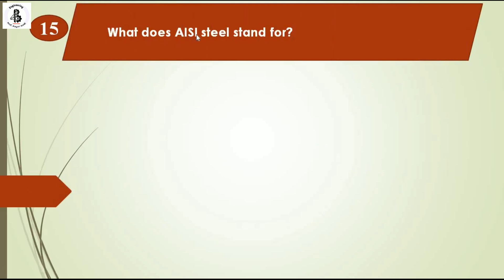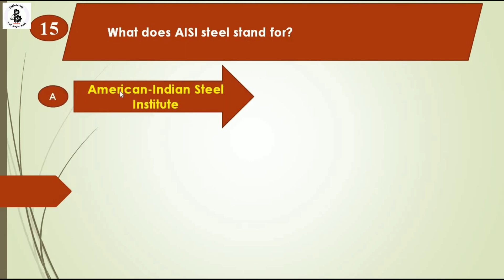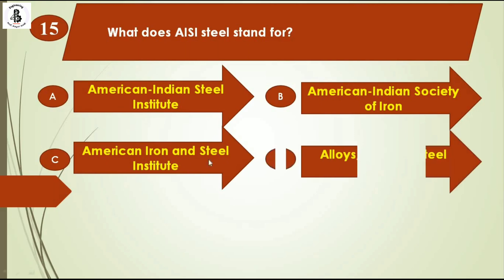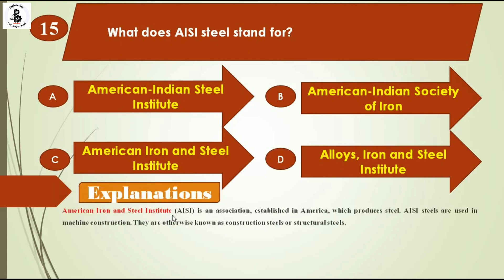What does AISI steel stand for? Option A American Indian Steel Institute, option B American Indian Society of Iron, option C American Iron and Steel Institute, option D Alloys, Iron and Steel Institute. The American Iron and Steel Institute, abbreviated AISI, is an association established in America which produces steels. AISI steels are used in machine construction, otherwise known as construction or structural steels. So the right answer is option C.